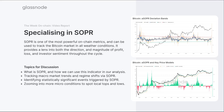So what is SOPR? SOPR stands for Spent Output Profit Ratio. We're looking at all of the coins that are spent and taking the average profit multiple. If it's above one, it means they realized a profit. Below one means that on average the market realized a loss. For those of you who saw our Mastering MVRV webinar series, MVRV is essentially the unspent profit multiple — the amount of profit and loss held within the system. SOPR is the other side of that equation, looking at the average profit and loss that was actually locked in by spent coins.